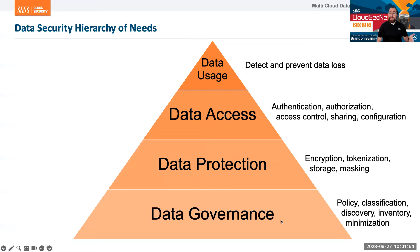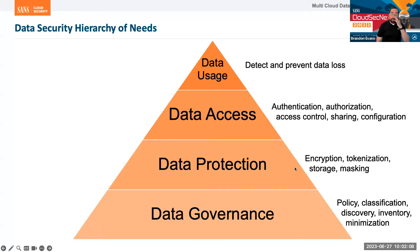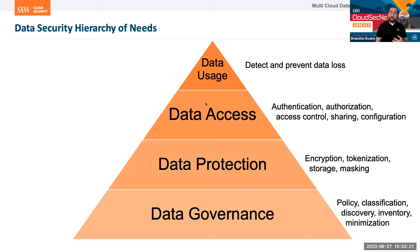Before you can do anything, you need to have policy and inventory, because if you don't have an inventory of your data, how can you possibly secure it? Then we can implement encryption, masking of our data, and proper storage of our data. Then we need to ensure that we have proper access control so that only the appropriate people have access to the data and that data is only shared appropriately. And then finally, for high-maturity organizations, we can detect and prevent data loss happening from our cloud accounts.